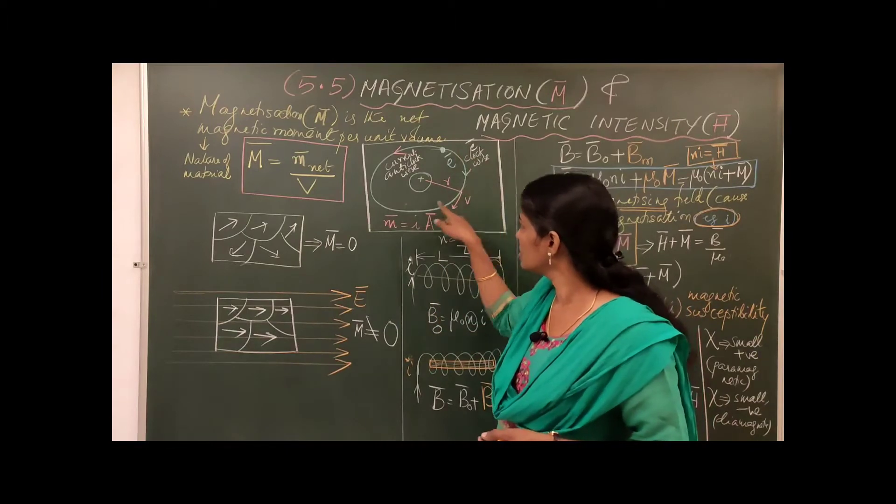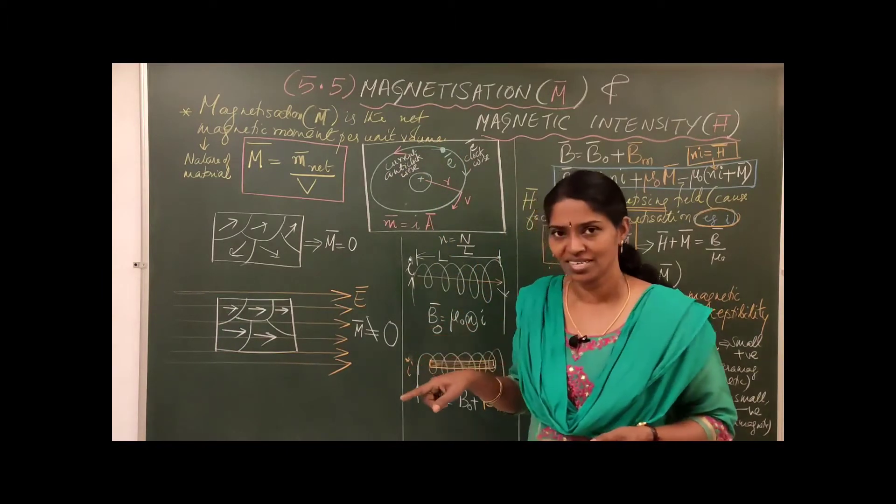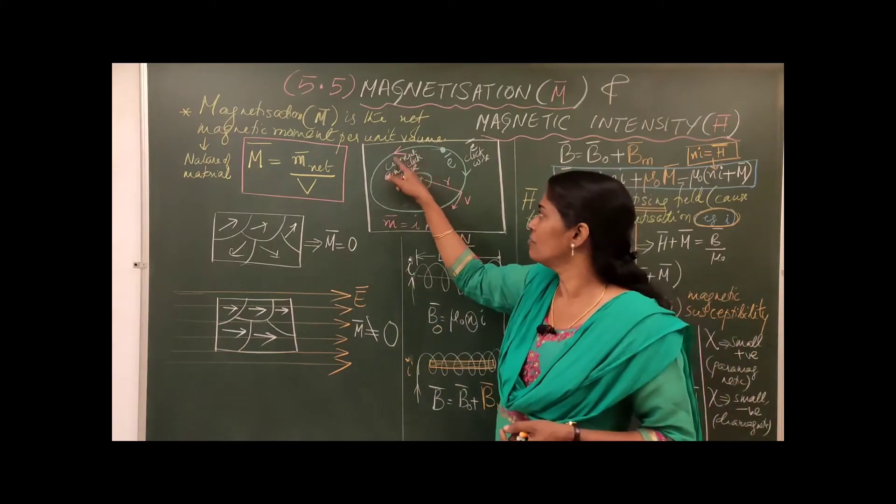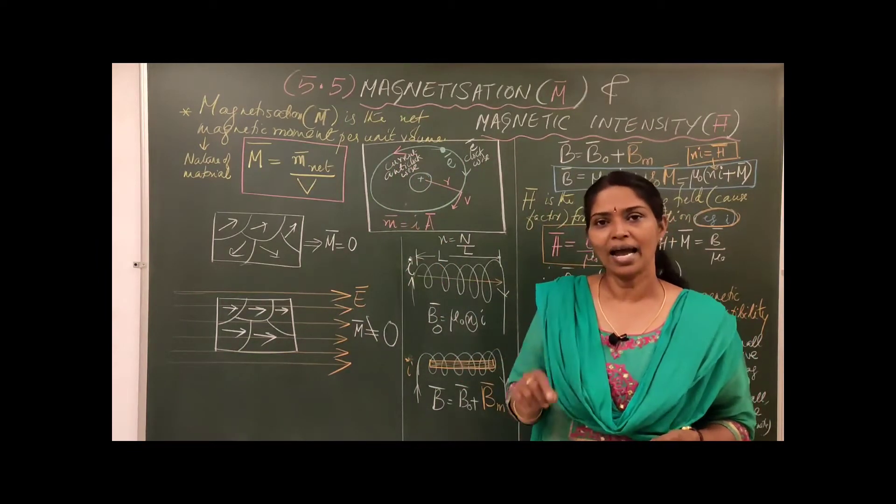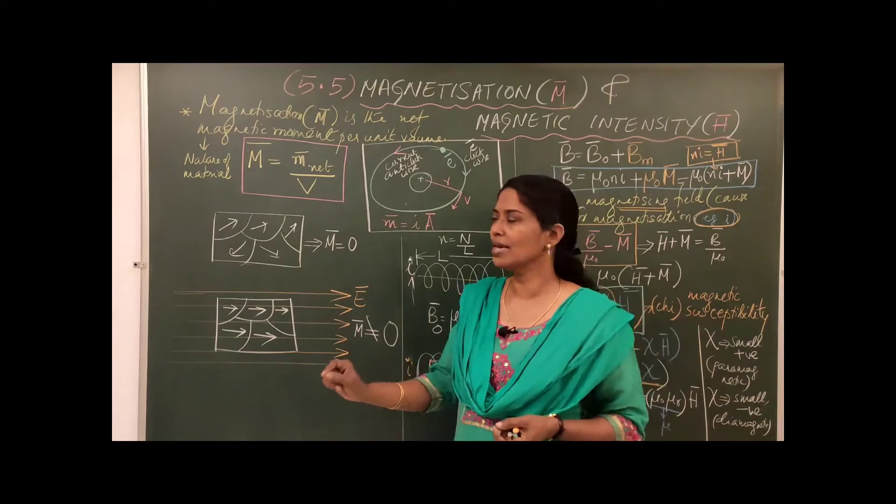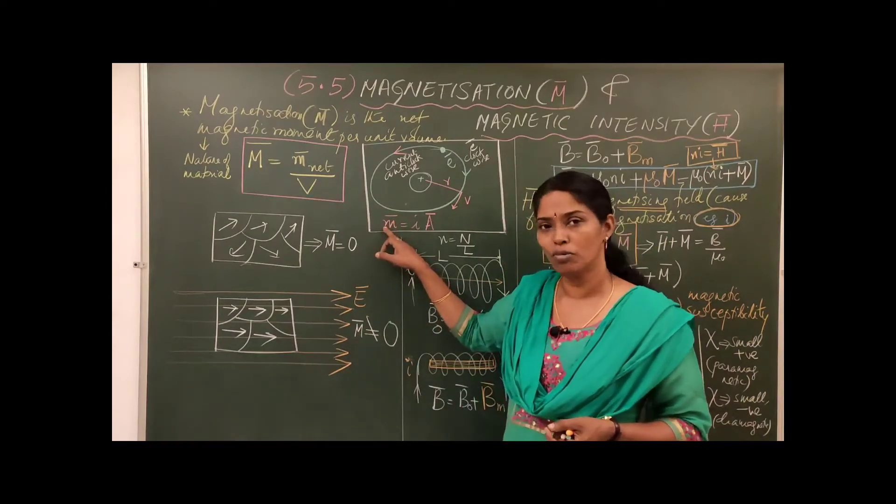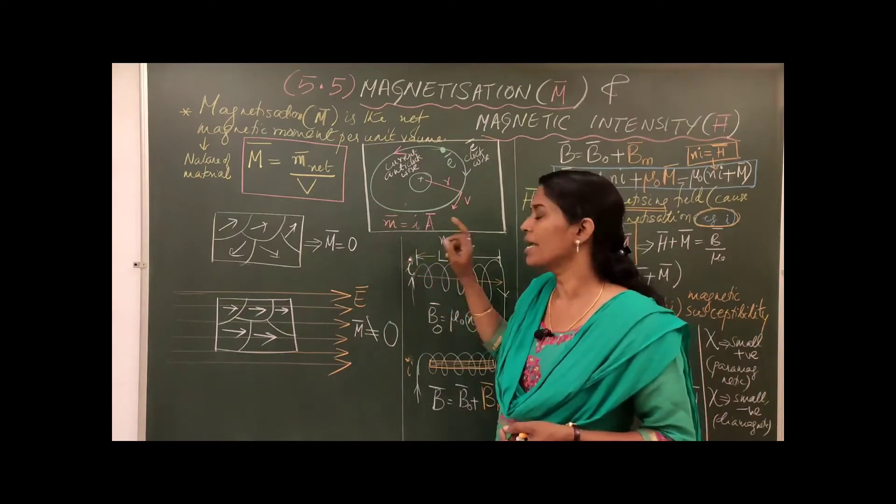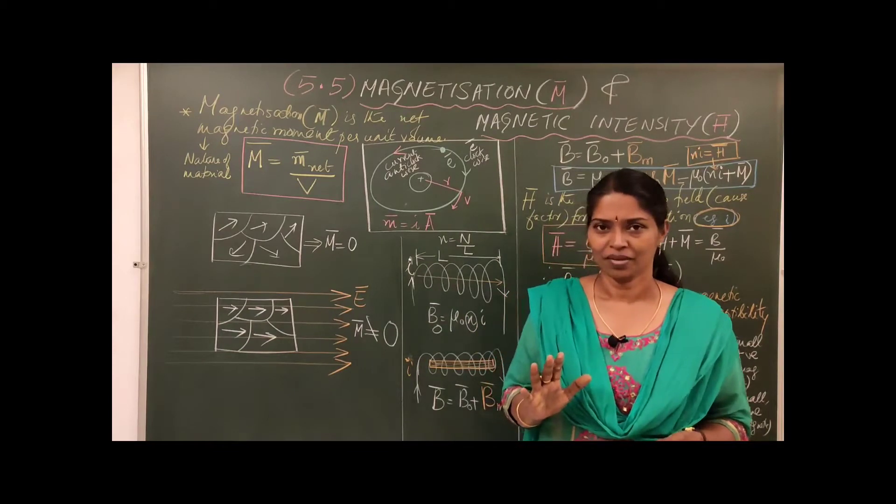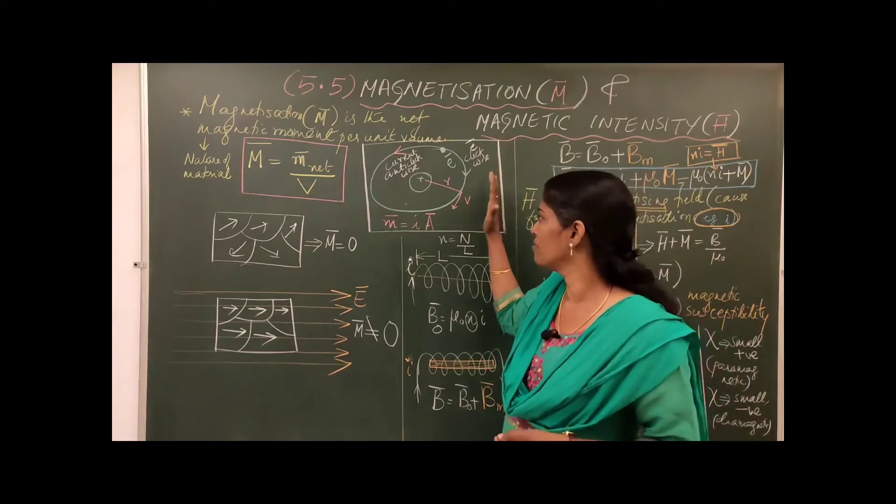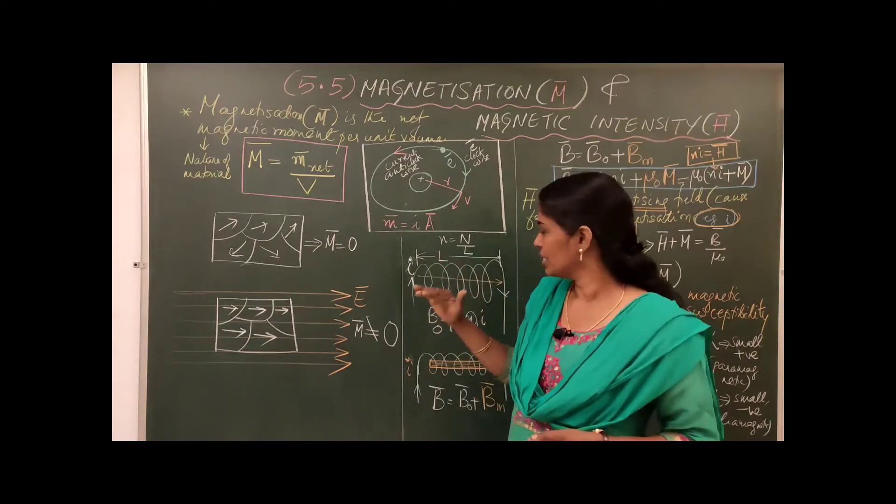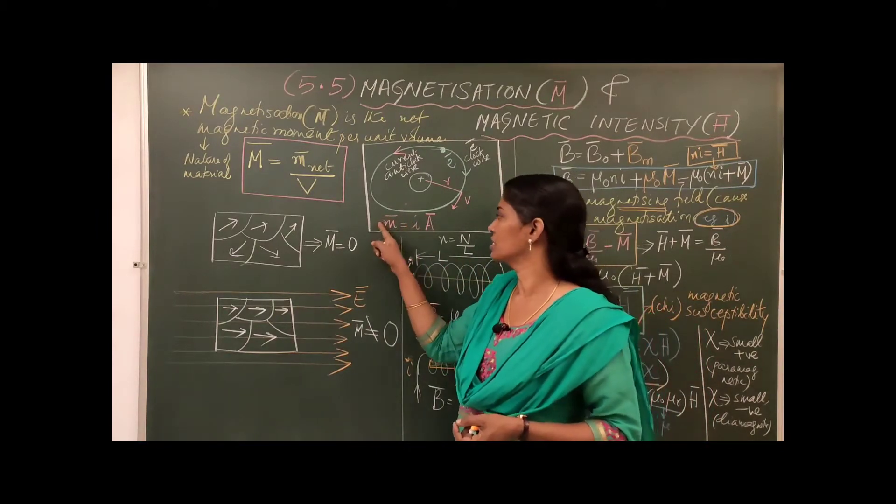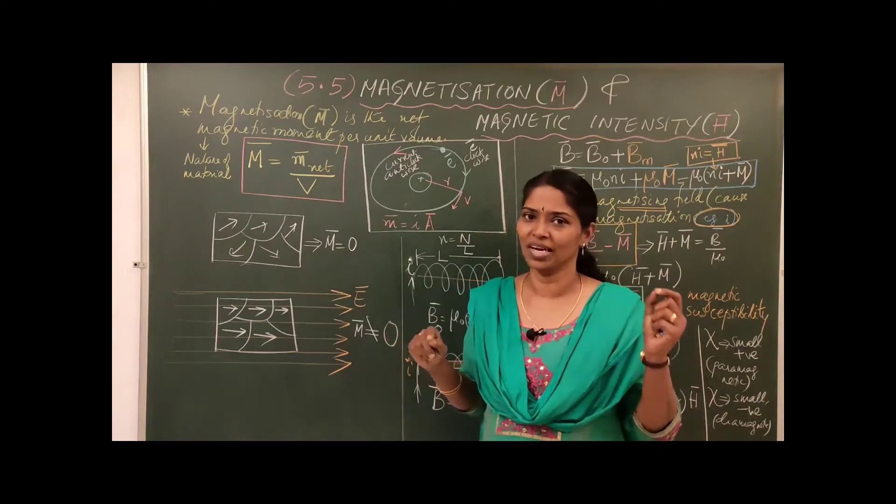So if electrons are moving in clockwise direction, conventional current for sure will be in the anticlockwise direction, and it is capable of making a magnetic dipole moment whose value is I times A bar. This is the previous knowledge we require for this lesson. One knowledge, other one I will come later. Hope it is clear, you can recap the points.